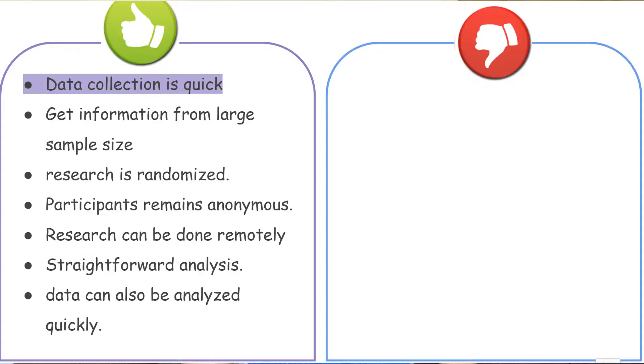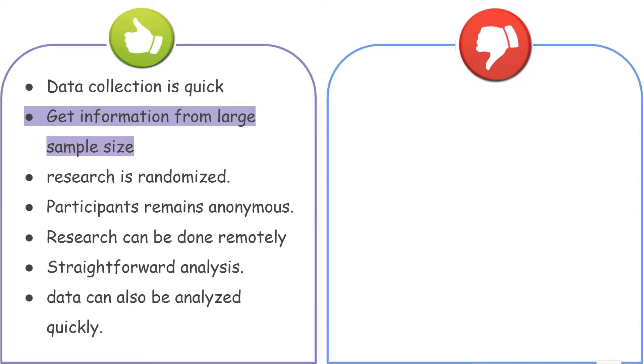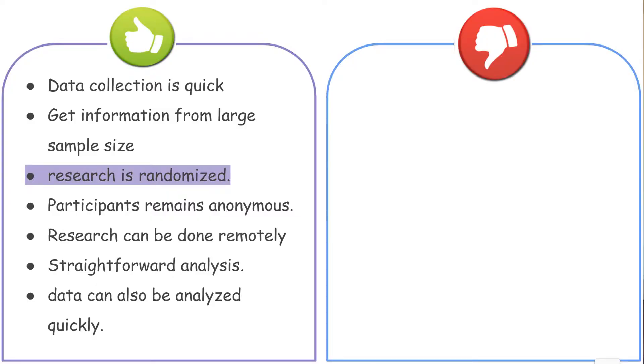Some of the pros of conducting quantitative research are: data collection is fairly quick, and because data collection is quick you can get information from a larger sample size — which can run into the hundreds of thousands or even more. Data can also be collected from different demographics randomly, which can then be statistically applied to the larger population under study.